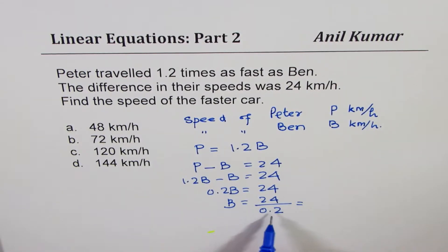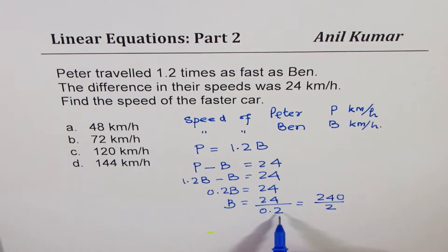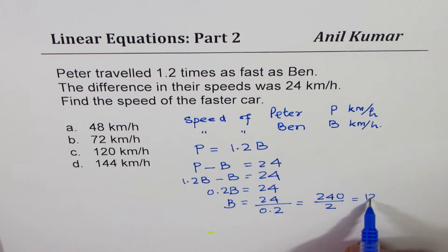When you divide by 0.2, let's be very clear, it becomes 240 divided by 2. So it is better to convert the decimal to a whole number. Well, if you have a calculator, no problems. You get 120.